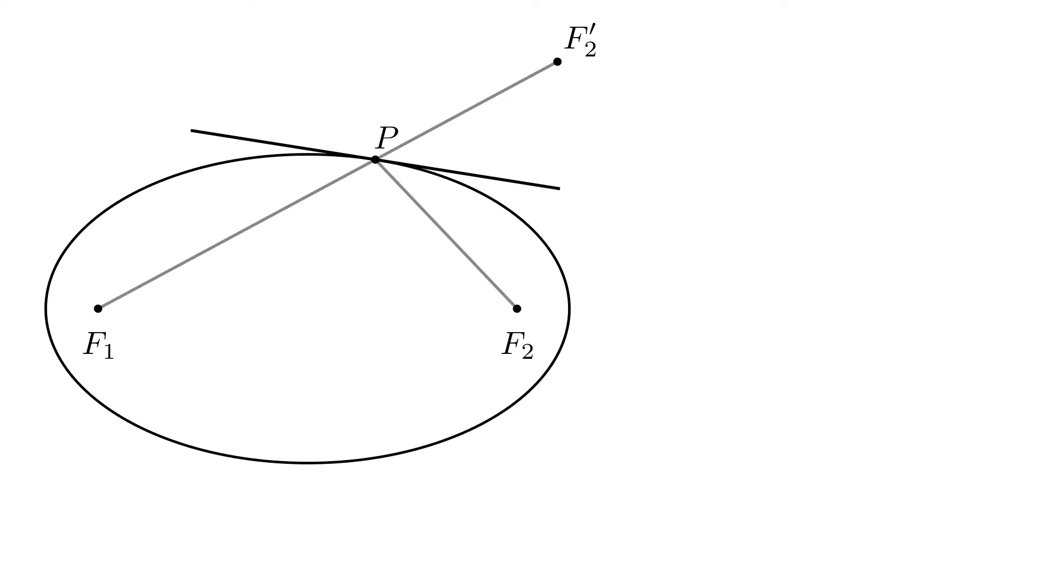Finally, let's denote the angle between the tangent and f1p by theta1, the angle between the tangent and f2 prime p by theta2, and the angle between the tangent and f2p by theta3. Now, theta1 and theta2 are equal as opposite angles, and theta2 and theta3 are equal because they're symmetric with respect to the tangent, which means that theta1 is equal to theta3.